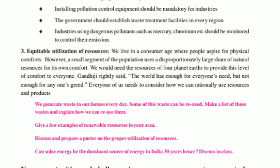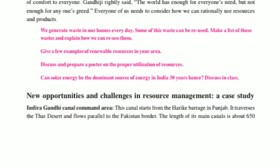Third: equitable utilization of resources. We live in a consumer age, and a small segment of the population uses a disproportionately large share of natural resources for comfort. Gandhi ji rightly said: the world has enough for everyone's need, but not enough for one's greed. Every one of us needs to rationally use natural resources and products — use only what we need, and show no greed.